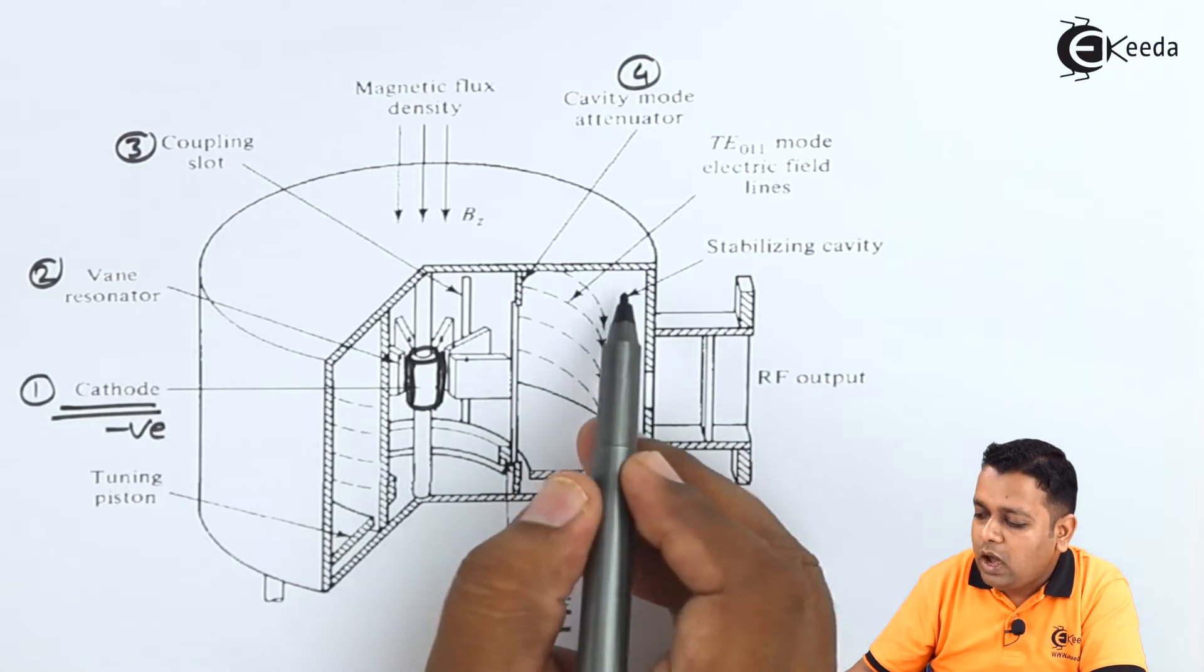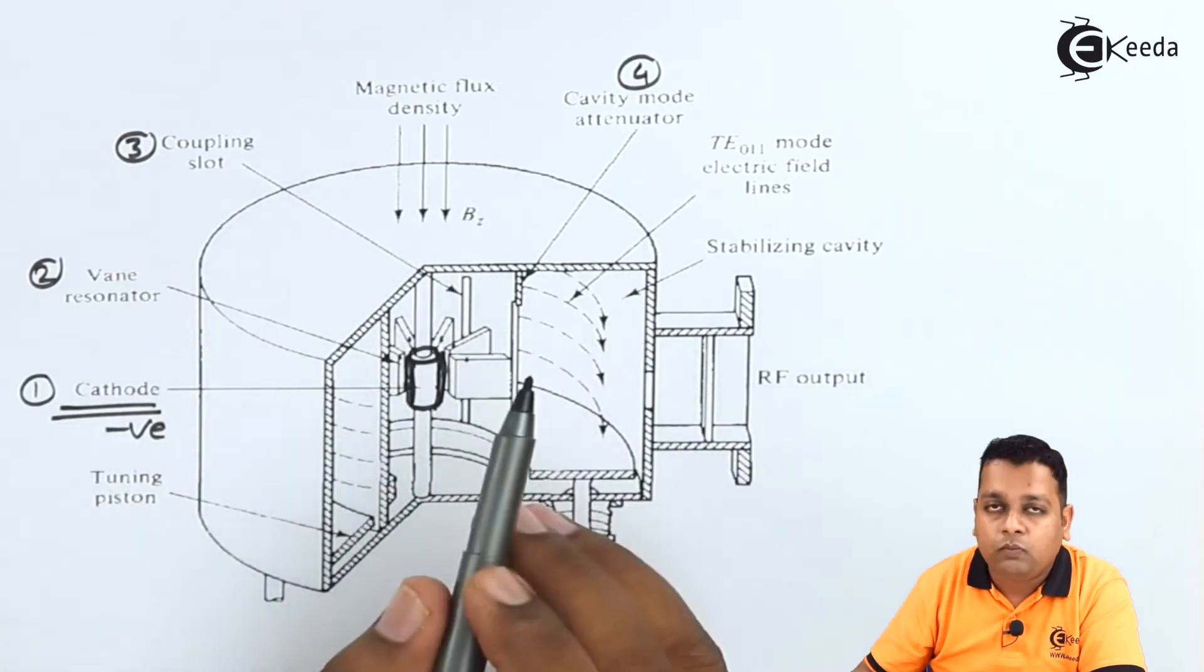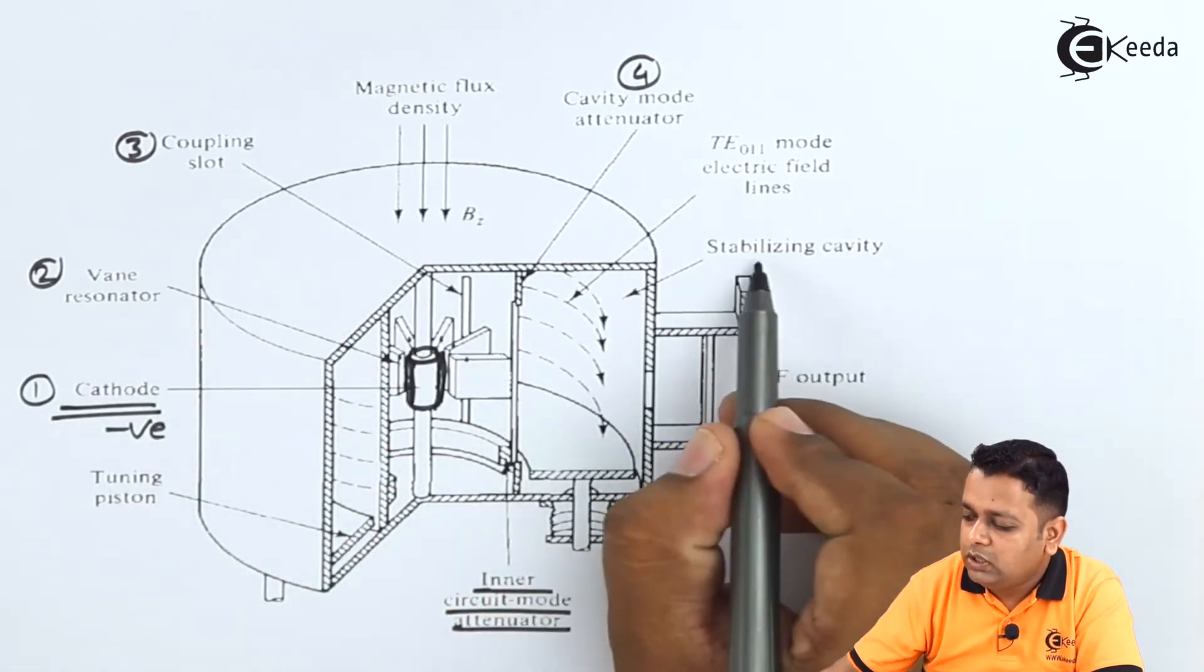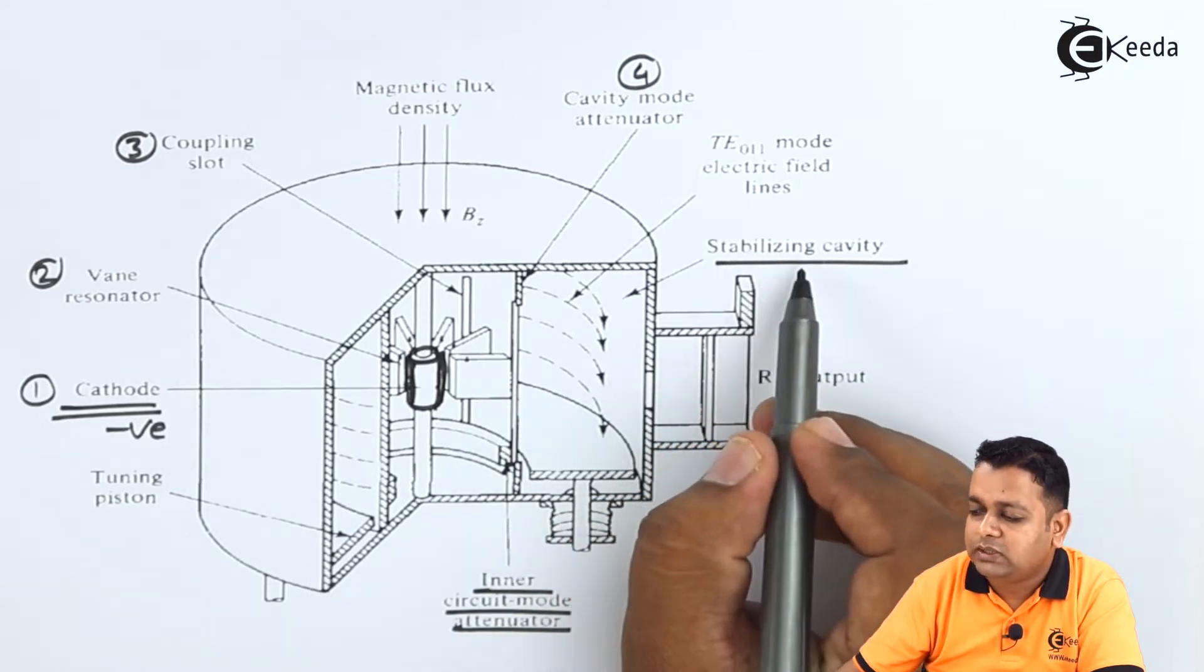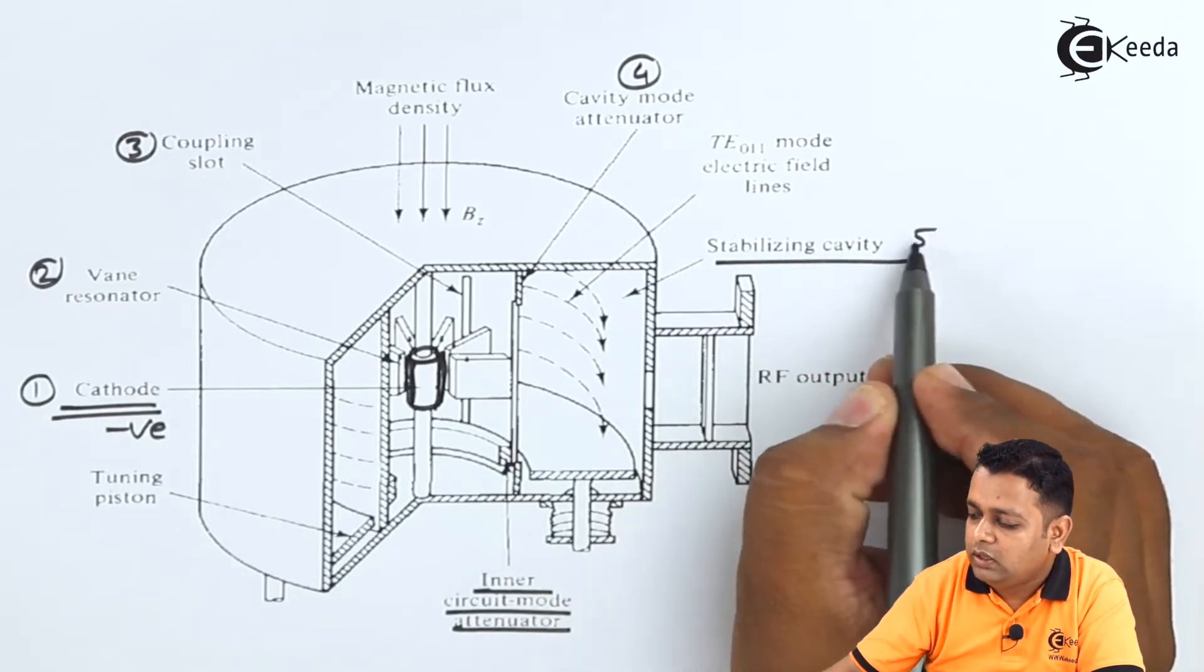And then the outer body of the anode that has been shown here and finally the purpose of this outer body is to make stabilizations into the cavity resonators here.